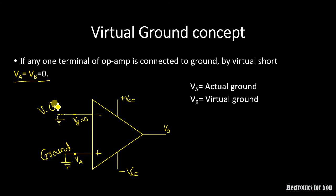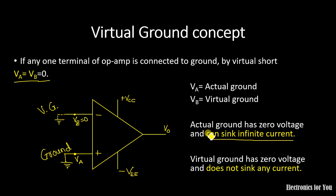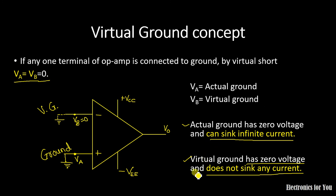In actual ground, we have 0 voltage and it can sink an infinite current. But in virtual ground, it has 0 voltage but does not sink any current. This is the difference between actual ground and virtual ground: actual ground can sink infinite current, whereas in virtual ground no current flows. Virtual ground has I equal to 0 and V equal to 0.